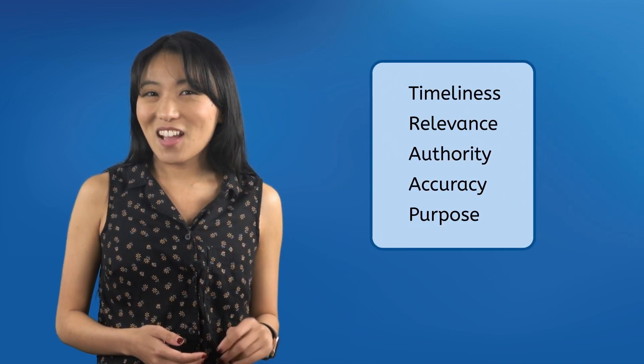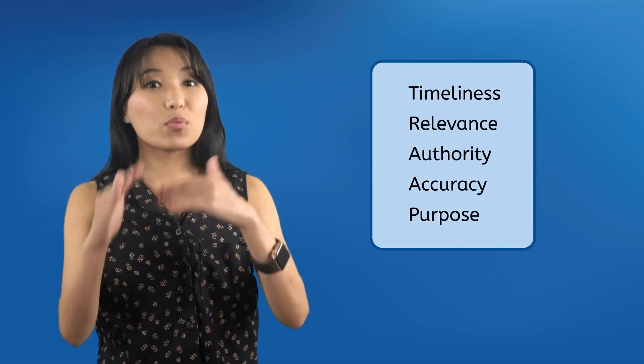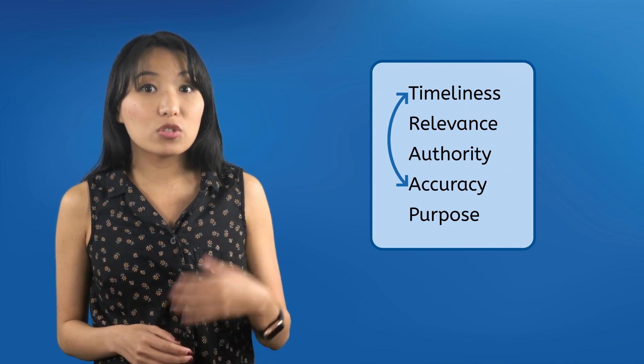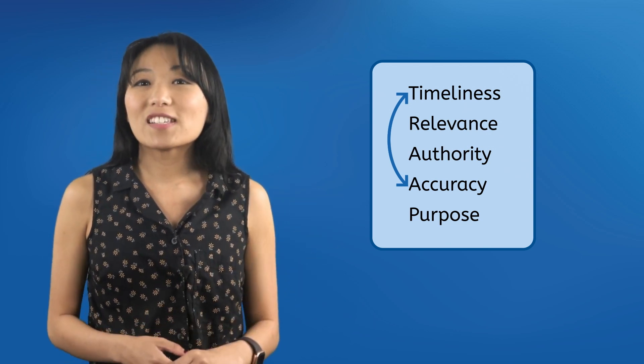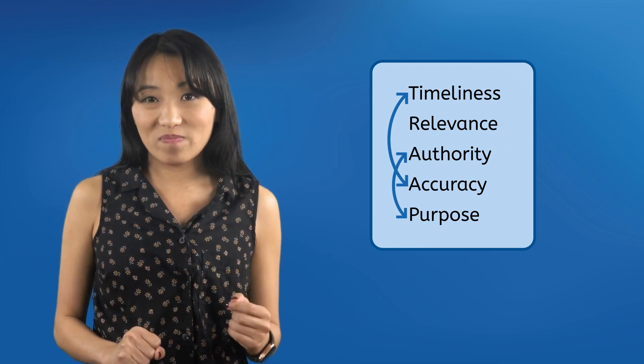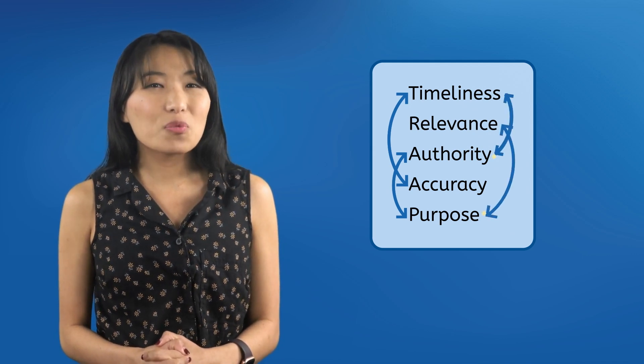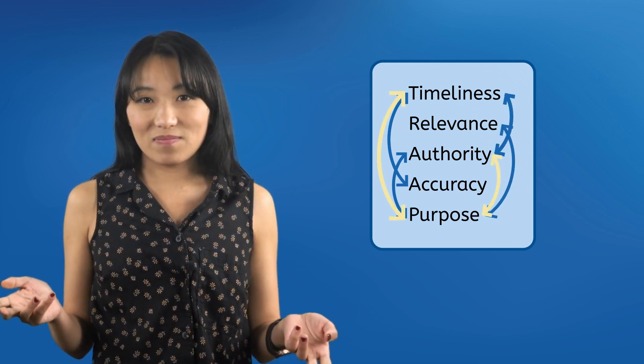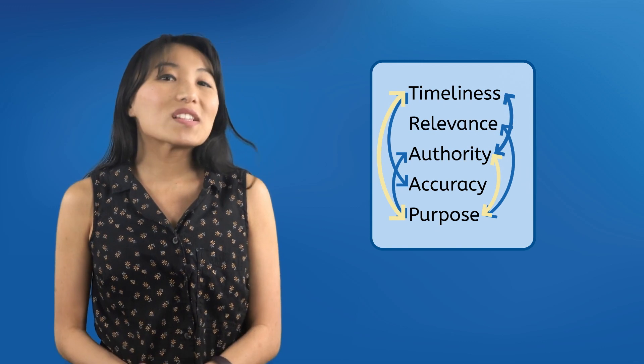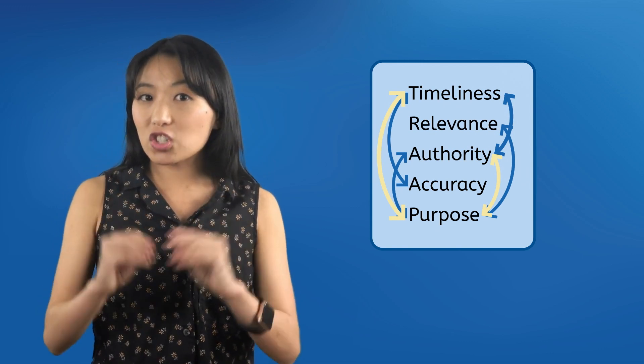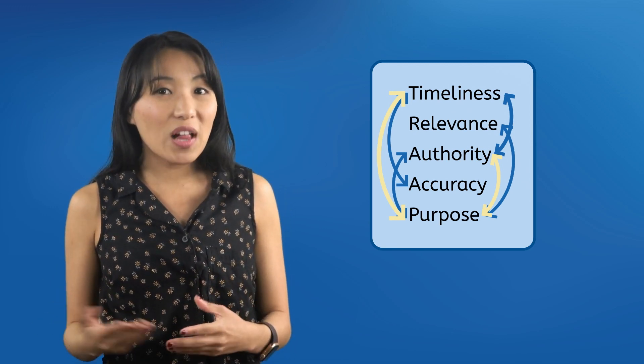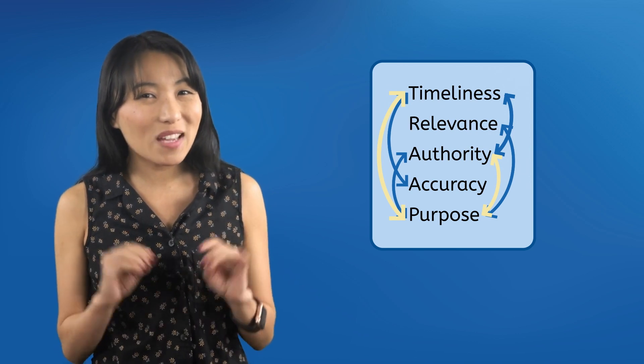You may have noticed something. A lot of these factors in TRAP overlap with each other. When looking for the most timely information, you'll probably find yourself comparing information to determine accuracy. While investigating the creator's authority, you'll gain some insights into the purpose of the information. Because of all the overlap, you'll rarely be evaluating a single factor at a time. Luckily, there really isn't an order you have to do the TRAP test in. What's important is that you carefully check each of the five factors so that you can get a good idea of whether the information is credible or whether you might be falling into a misinformation trap.